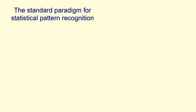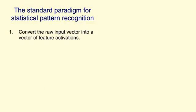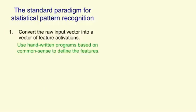In statistical pattern recognition, there's a standard way to recognise patterns. We first take the raw input and we convert it into a set or vector of feature activations. We do this using handwritten programmes which are based on common sense, so that part of the system does not learn. We look at the problem, we decide what the good features should be, we try out some features, we see if they work, and if they don't work we try some more features, until eventually we get a set of features that allow us to solve the problem by using a subsequent learning stage.